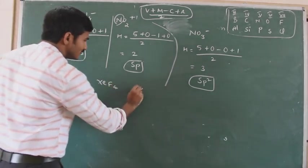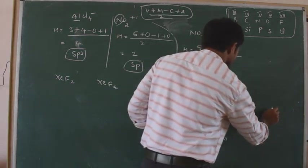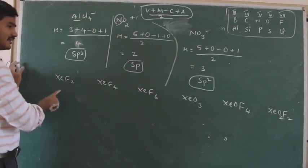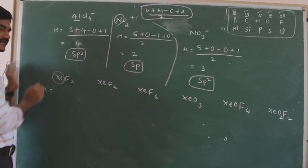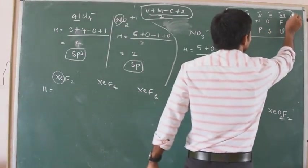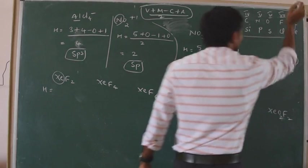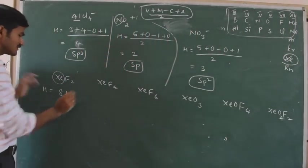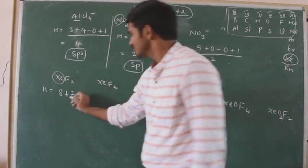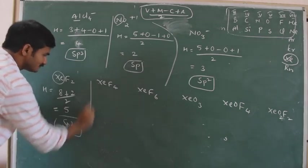Now some molecules involving eighth-group elements: XeF2, XeF4, XeF6, XeO3, XeOF4, and XeO2F2. For XeF2: central atom is Xenon, which belongs to the eighth group, so V equals 8. Monovalent atoms (fluorines) — 2. No charge. So (8 + 2) / 2 = 10 / 2 = 5. Five means SP3D hybridization.